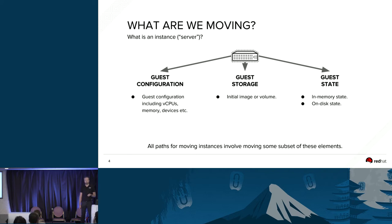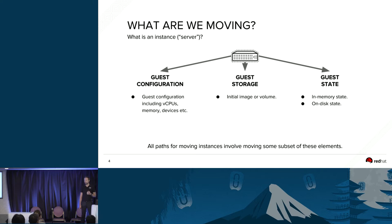All of the paths we have for moving instances around a compute deployment involve moving some subset of these elements. But which mechanism you use for moving the instances will vary depending on which of these elements you care about. You may not necessarily care too much about the on-disk state for ephemeral or the in-memory state if you have particularly cloud-ready applications, and you may be willing to throw that away, but just want to know that the instance is going to come back up somewhere else in the initial state that you had in the image.